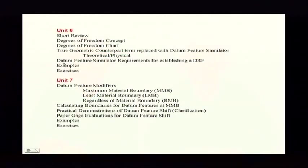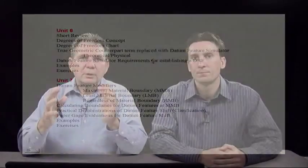There's a really important section here: datum feature simulator requirements. There's a set of rules that defines how you set up a datum reference frame. That's on page 613 in your workbook, and you want to go through and understand that because it's the whole basis. Before, how you set up this coordinate system and order of precedence — you knew it, but you couldn't really find it in a book. It was all displaced, and now it's in one place. That's really important. We're going to cover that in Unit 6.